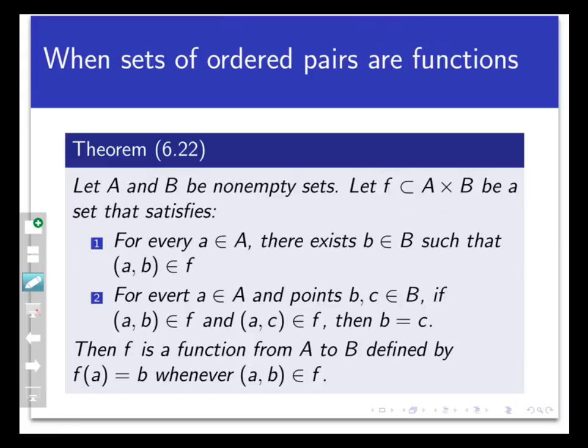The second property here is just a fancy way of saying that inputs don't split. If you have something that looks like two ordered pairs with the same first coordinate, then actually the second coordinates have to be the same. Said differently, you can never have two different pairs with the same first coordinate.